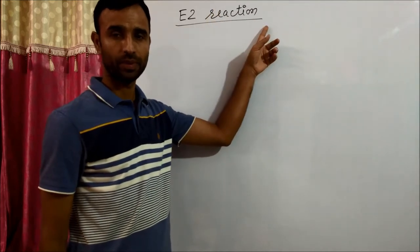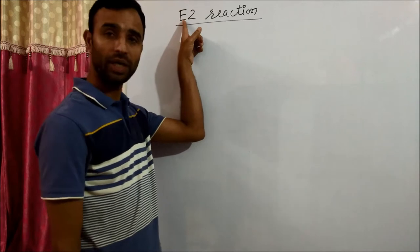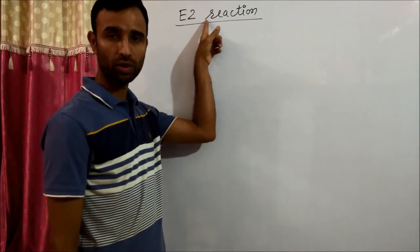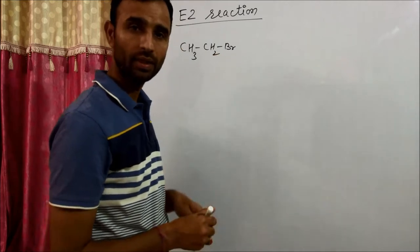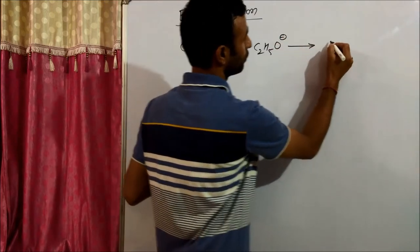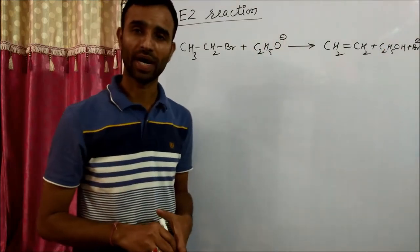E2 reaction means elimination bimolecular. One example is provided by ethyl bromide with ethoxide ion, and we get ethene along with ethanol and bromide ion.